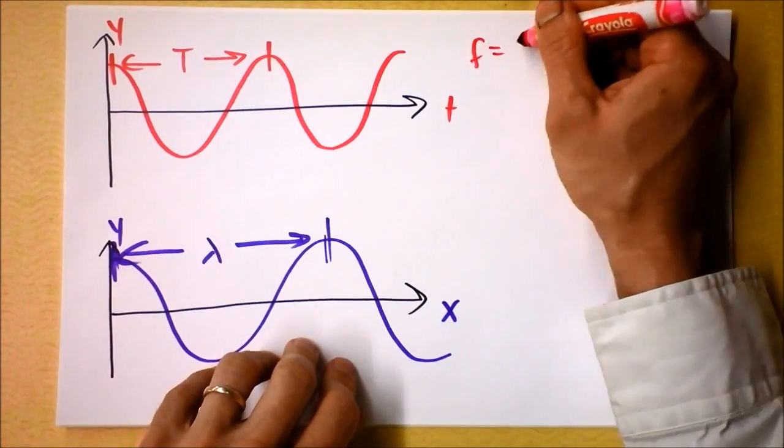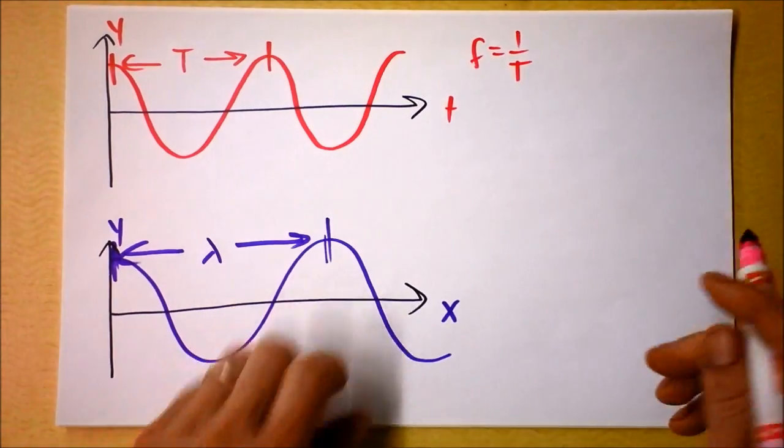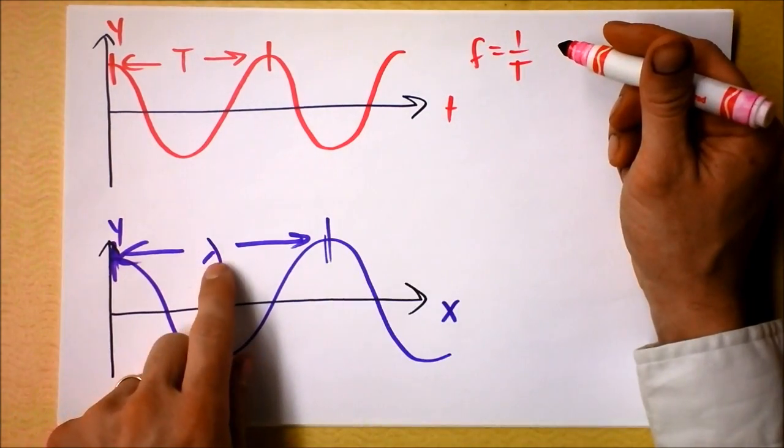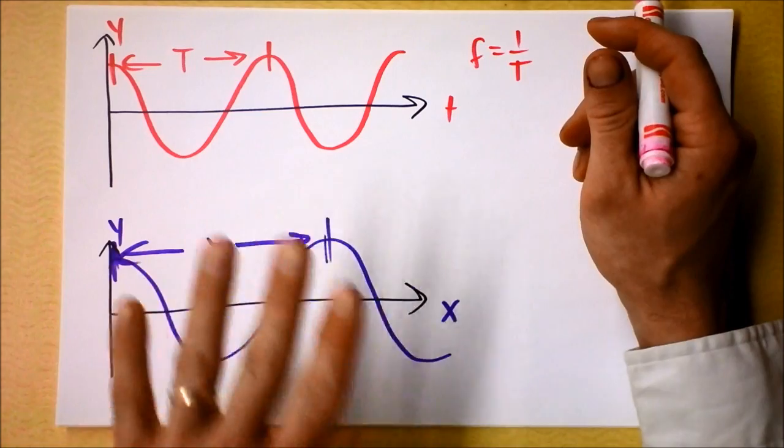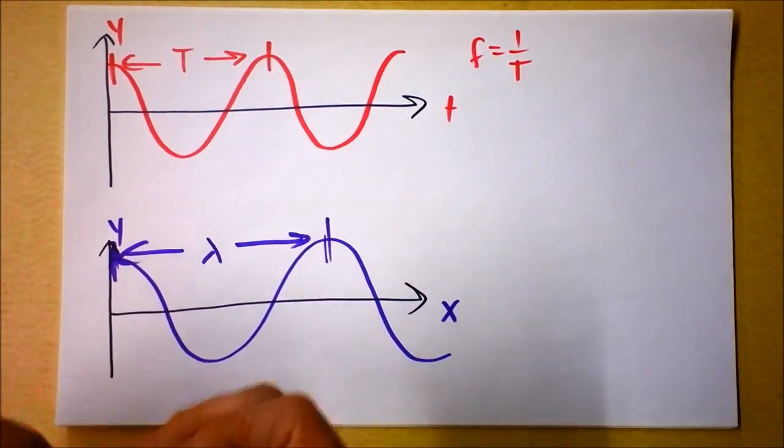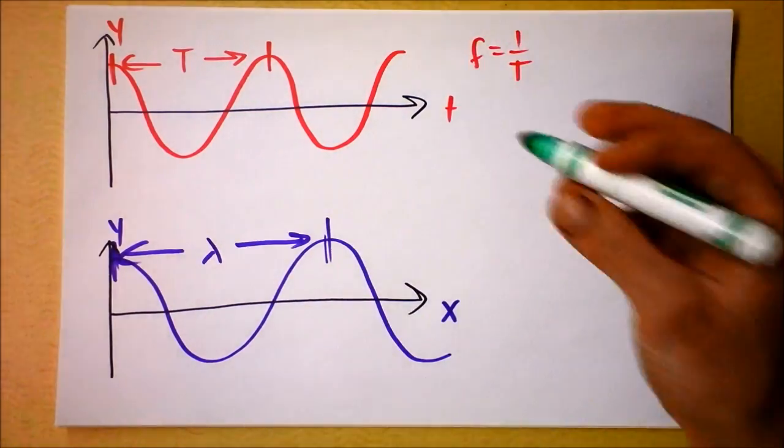And of course we know that frequency is one over period. And frequency and wavelength are related in such a way that they tell you how fast the wave is going. And that's really cool. As we get into light, we're going to want to think about that one more time.